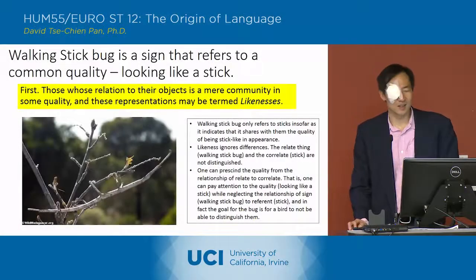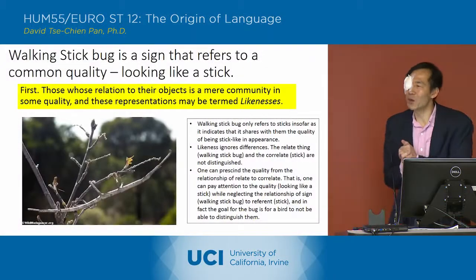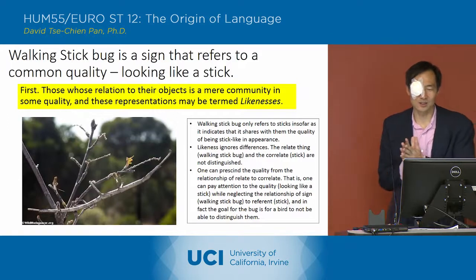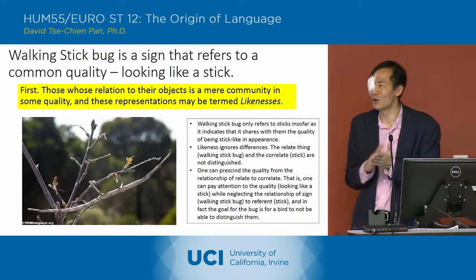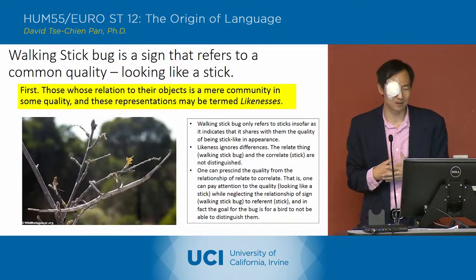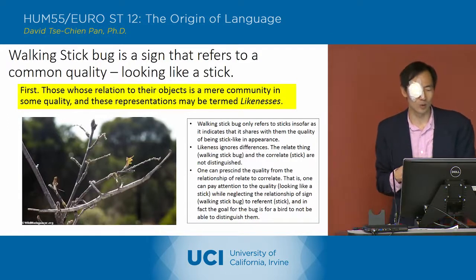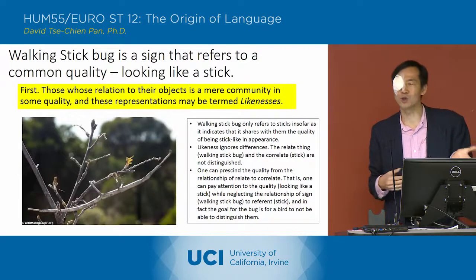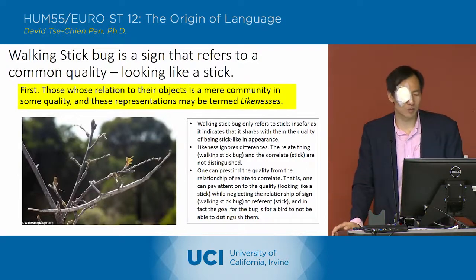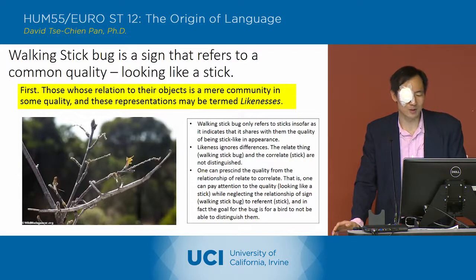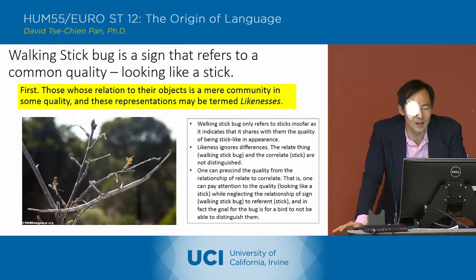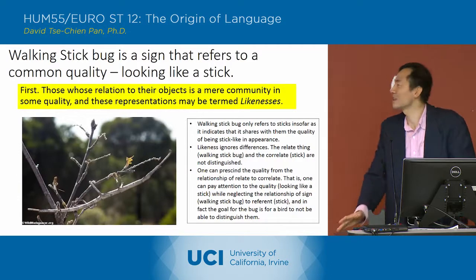The first example is the walking stick bug, which is a sign that refers to a common quality. It's a likeness in which it corresponds to what Peirce says: those whose relation to their objects is a mere community in some quality, and these representations may be termed likenesses.